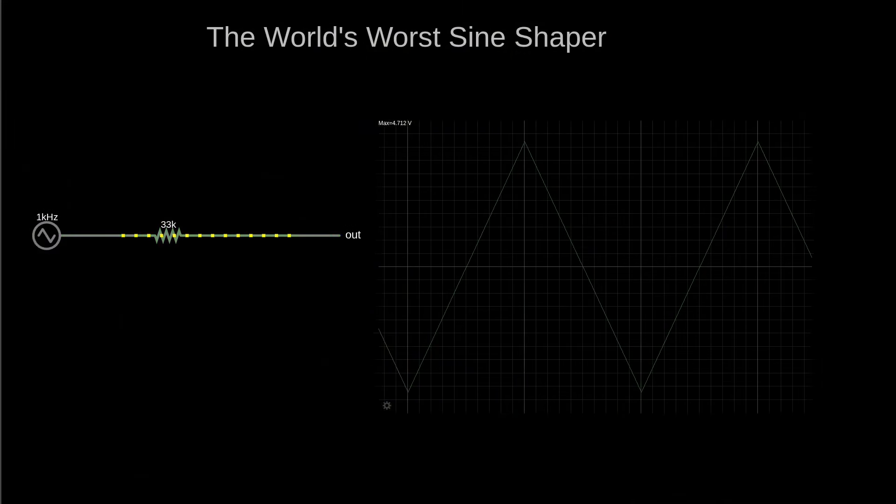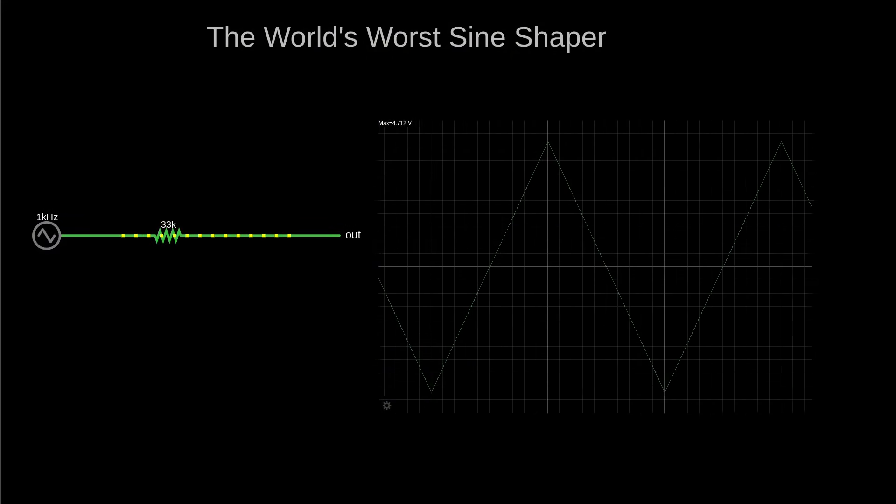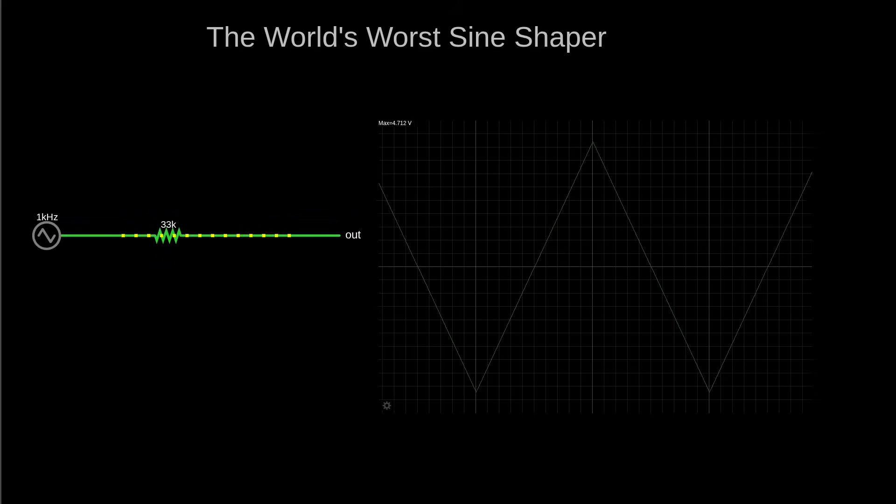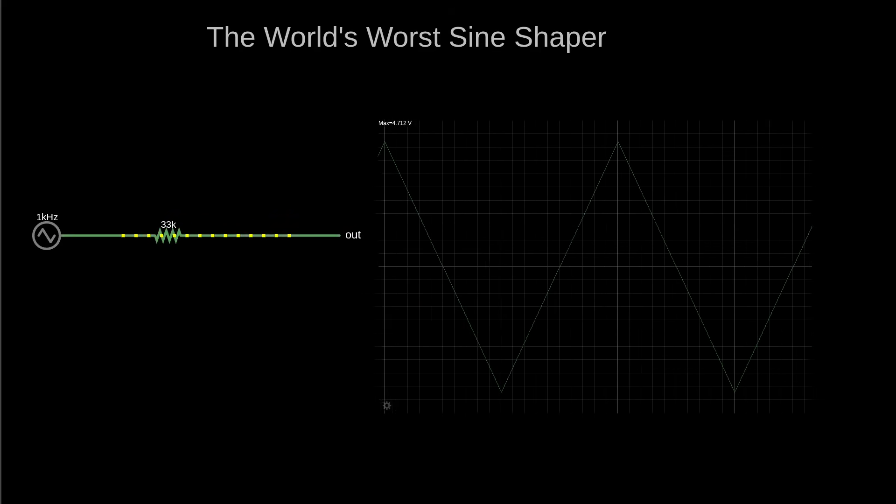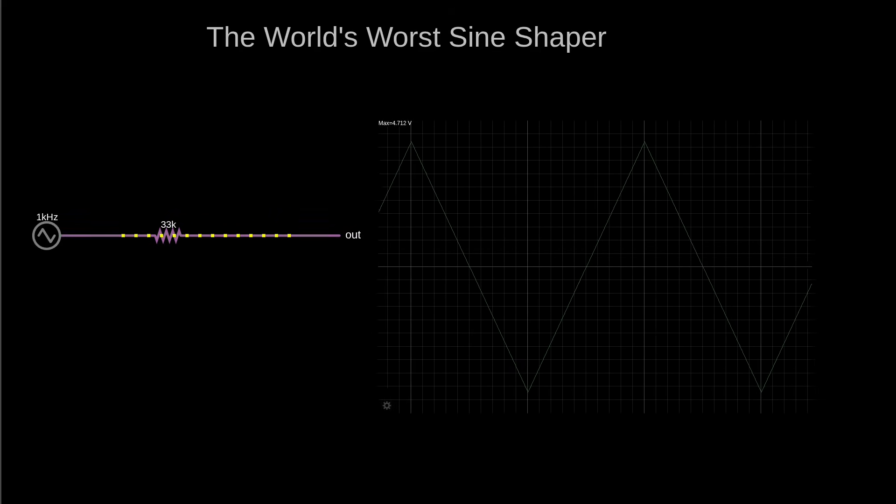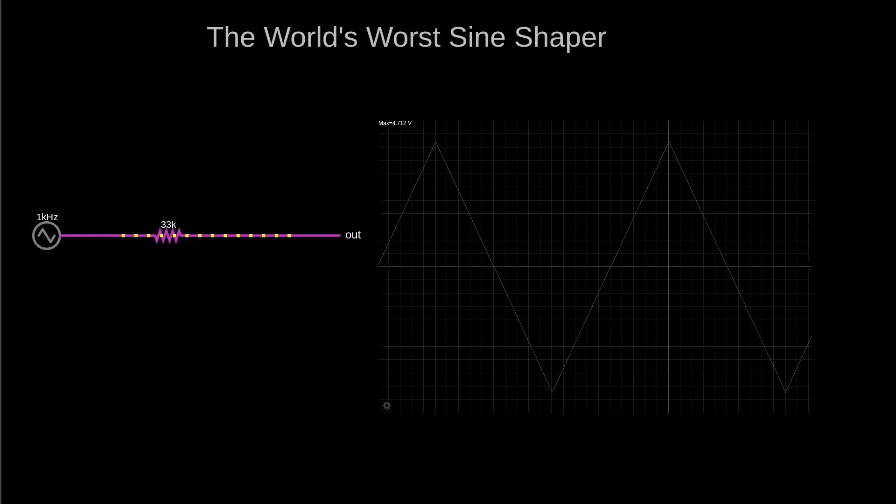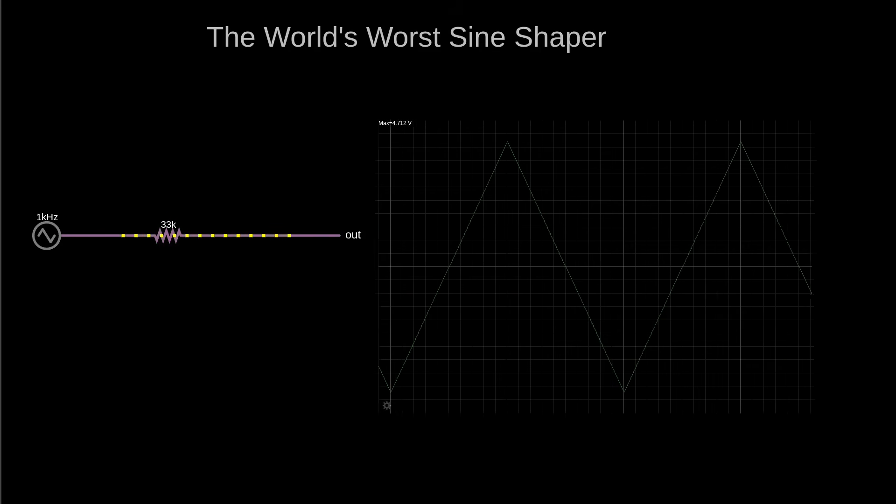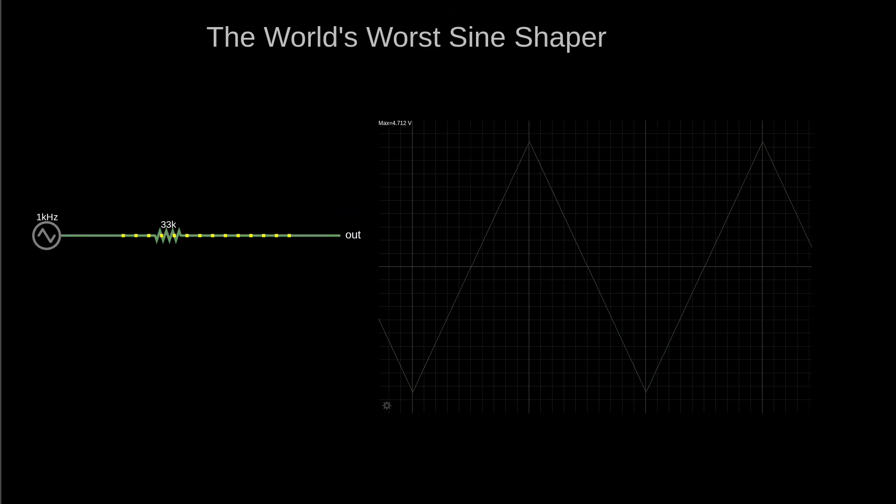But before we jump into scaling components, how does this diode ladder thingy actually work? We'll start with the simplest possible sine shaper. Nothing. Well, you have to start somewhere, right? Besides, a triangle wave is sort of kind of an approximation to a sine, isn't it? I didn't say it was a good sine shaper.